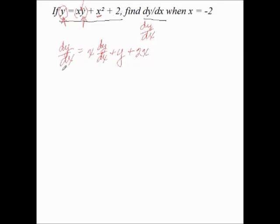Now we see that we have dy dx in two locations, so it'd be important to get all the terms that have dy dx on one side of the equation and all the others on the other. So this would be dy dx minus x dy dx equals y plus 2x.